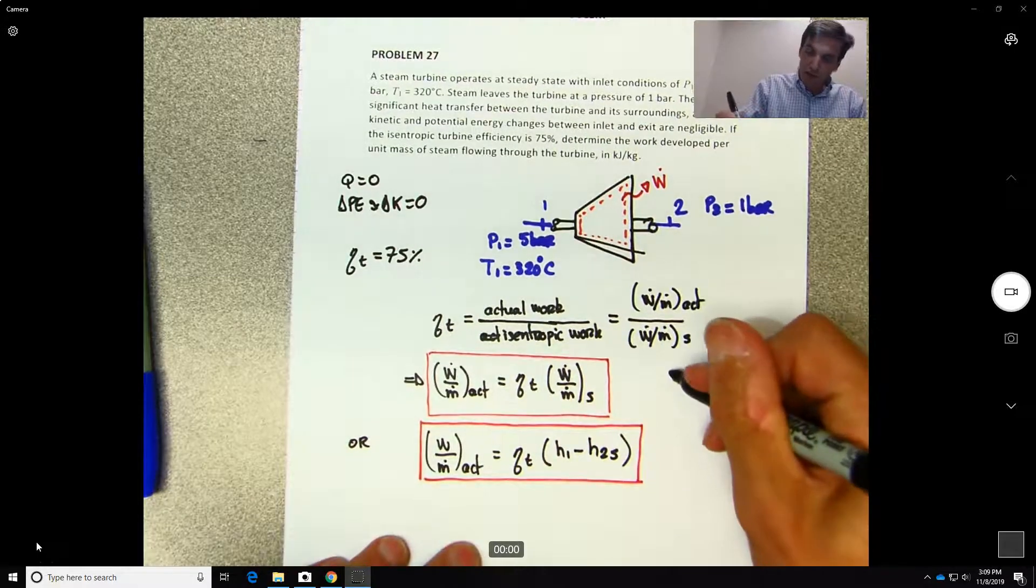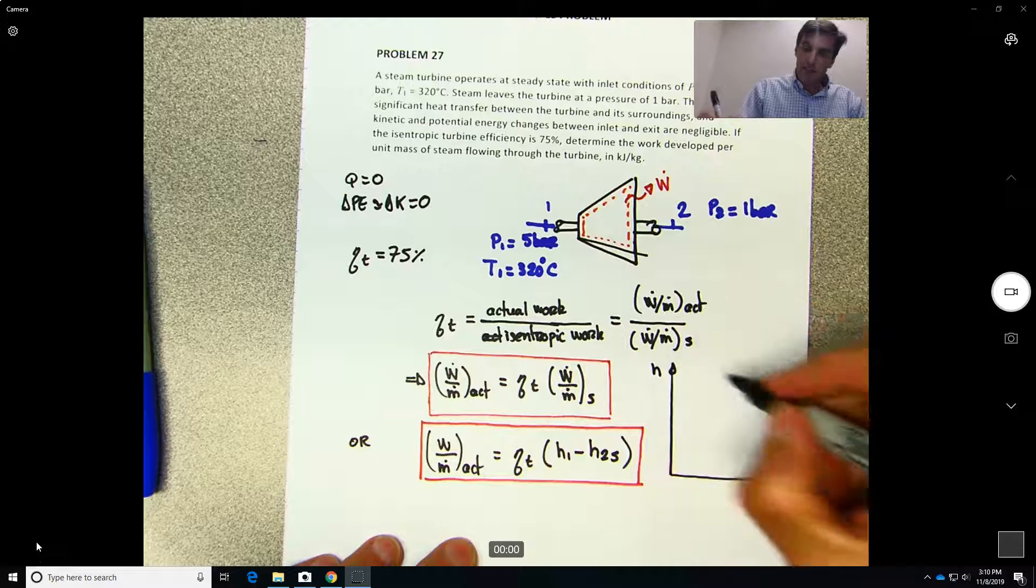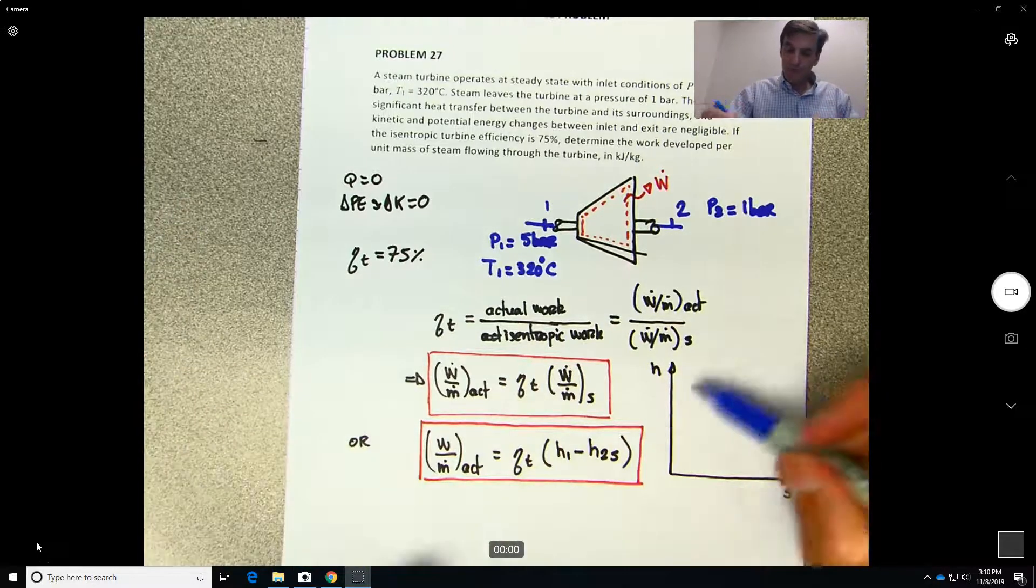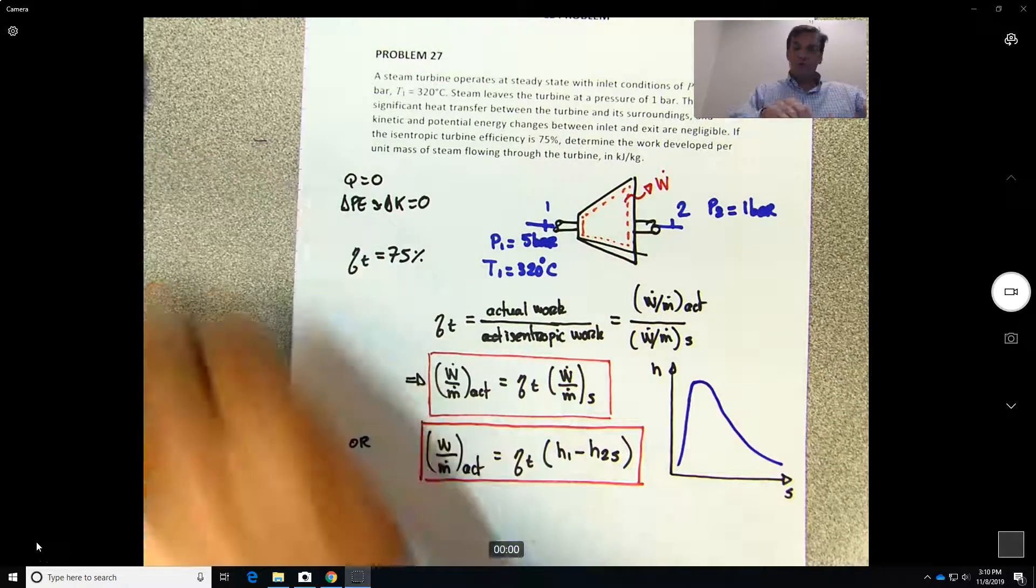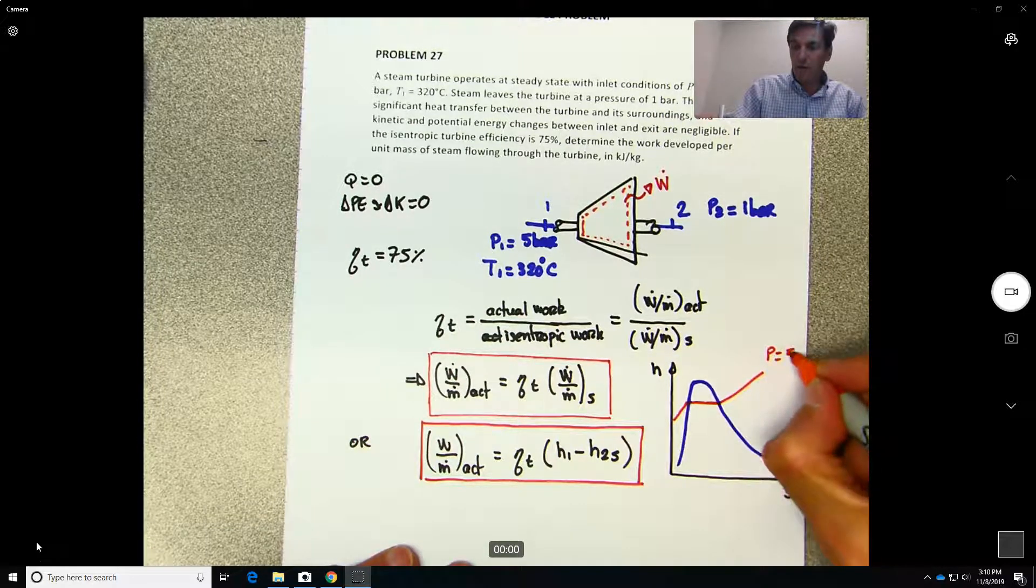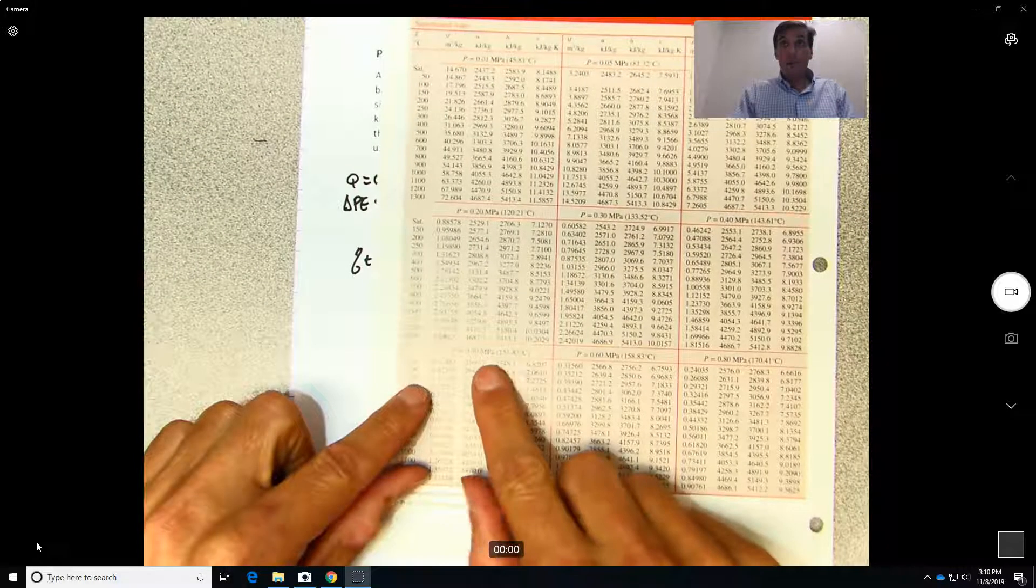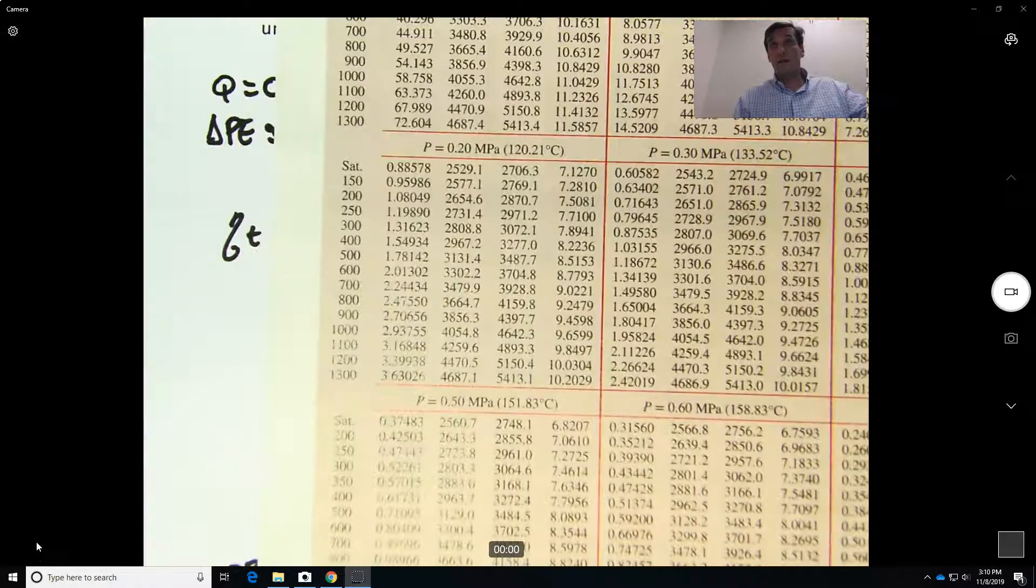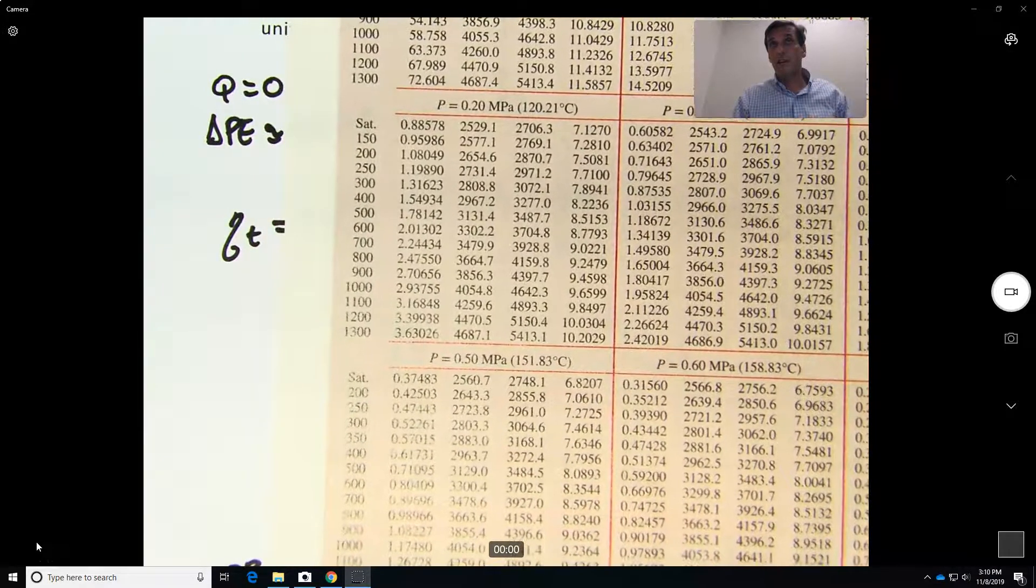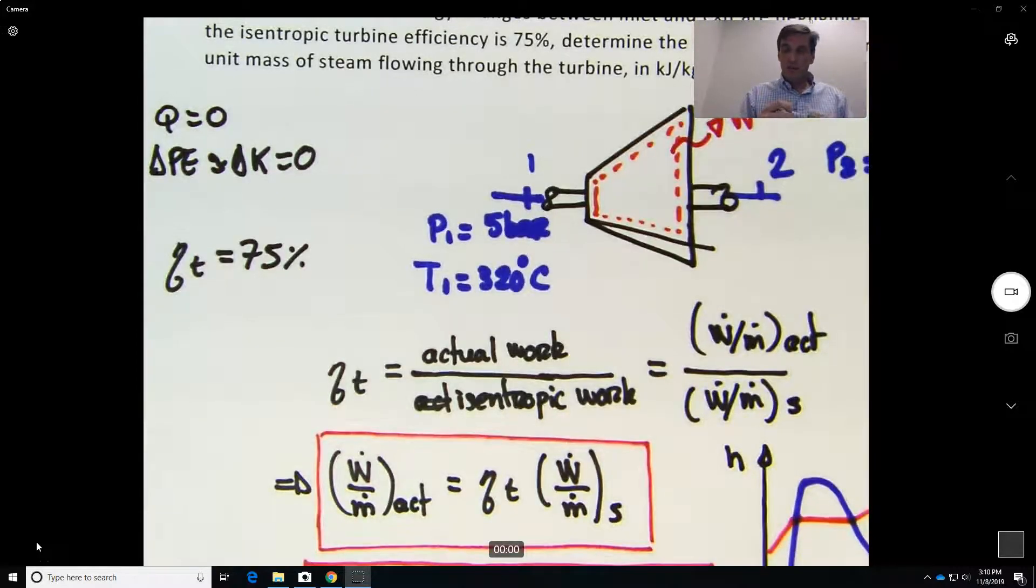So we can do the h over here, s over here. We know initially the curve goes from high pressure of 5 bars. If you go to the tables, 5 bars is the same thing as 0.5 megapascals. The saturation is 151.83, so that means actually that state 1 is way high over here. Imagine this is T, so we'll be way high over here.